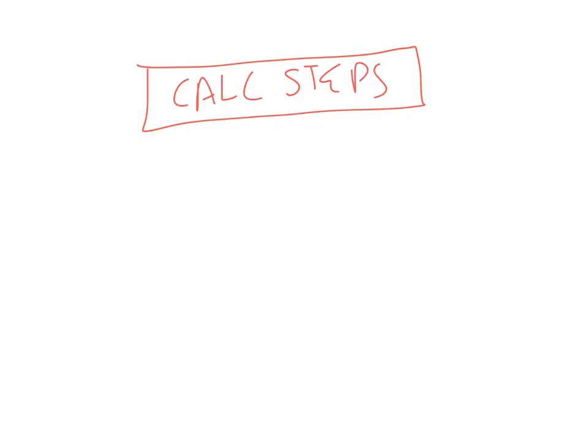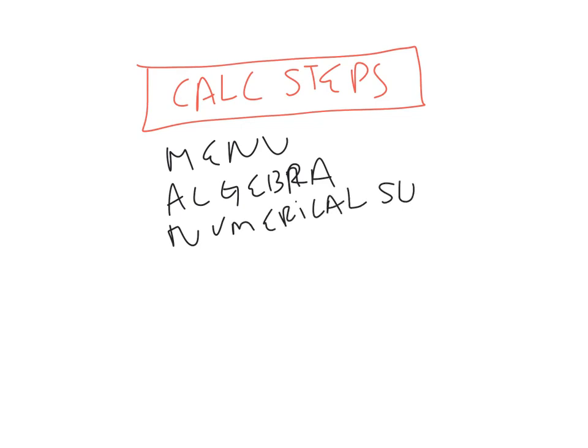Here are your calculator steps in case you're having difficulties solving some of these. You're going to go to menu. You're going to go to algebra. And you're going to go to numerical solve. You're going to type in the equation, put comma, tell it to solve for x, and it will spit out the answer for you.